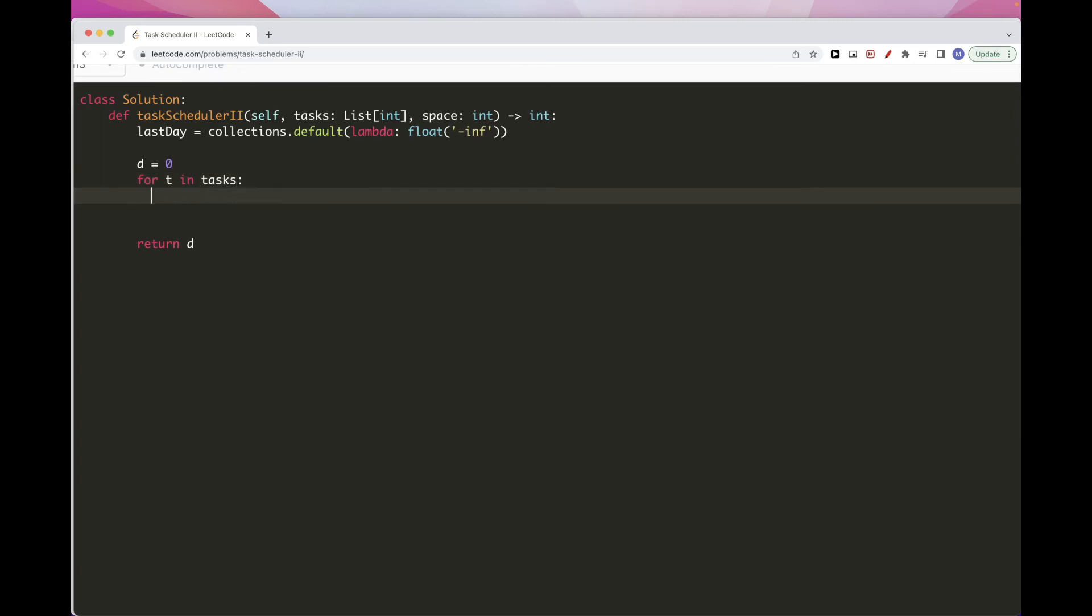And then we'll go through the tasks. And as we said, the day we will do the task is either the next day from the previous task or the last day for the same type, plus space, plus one. So whichever is bigger, that's the one we have to take, and then at the end, we need to store the last day and update the last day for this type of task. So actually, let's make this clearer with type, oh, type is not, okay, just t, but the last for the same type of task, the last day is now the one for this task, so d.